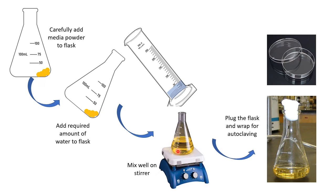For proper mixing, use a hot stirrer plate with a magnetic stirrer. Place the flask on the stirrer and let the powder mix thoroughly. Then plug the flask and wrap it properly for autoclaving. Depending on the institute or college, some wrap the flask with aluminium foil and others use newspaper secured with a rubber band — it depends on local practice.